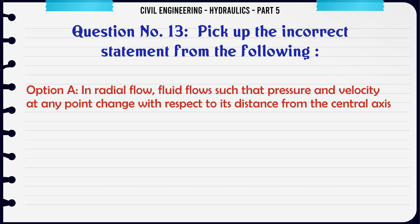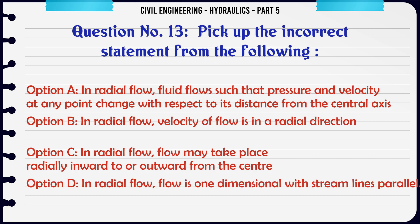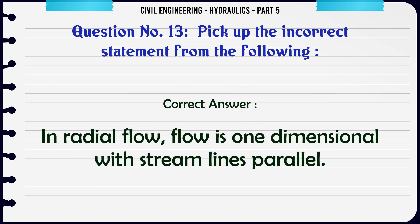Pick up the incorrect statement from the following: A. in radial flow fluid flows such that pressure and velocity at any point change with respect to its distance from the central axis, B. in radial flow velocity of flow is in a radial direction, C. in radial flow, flow may take place radially inward or outward from the center, D. in radial flow, flow is one-dimensional with streamlines parallel. The correct answer is D.